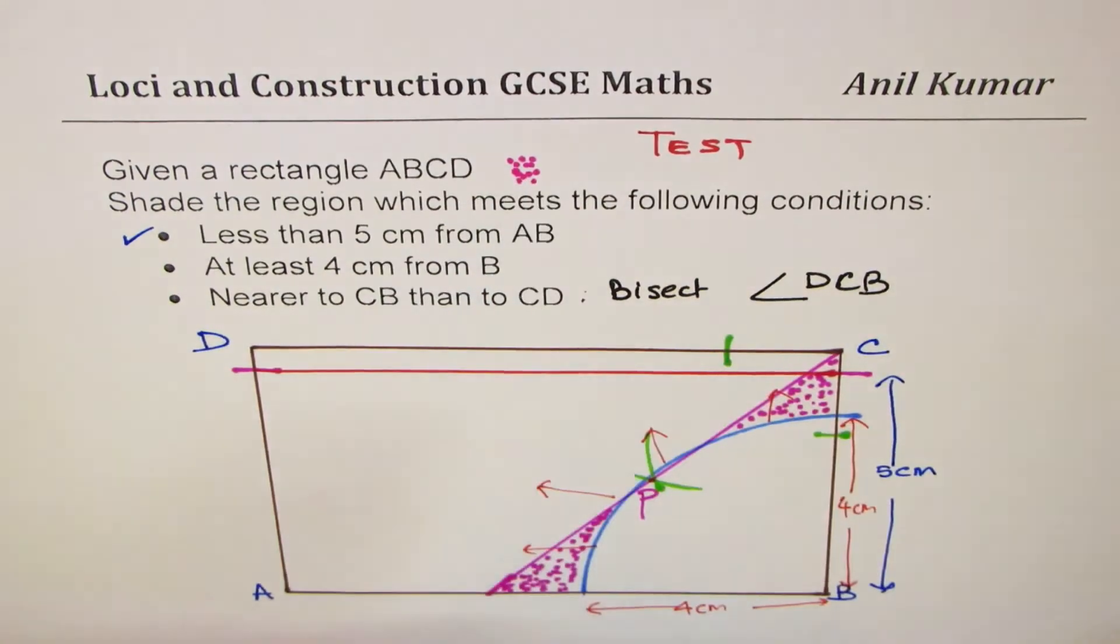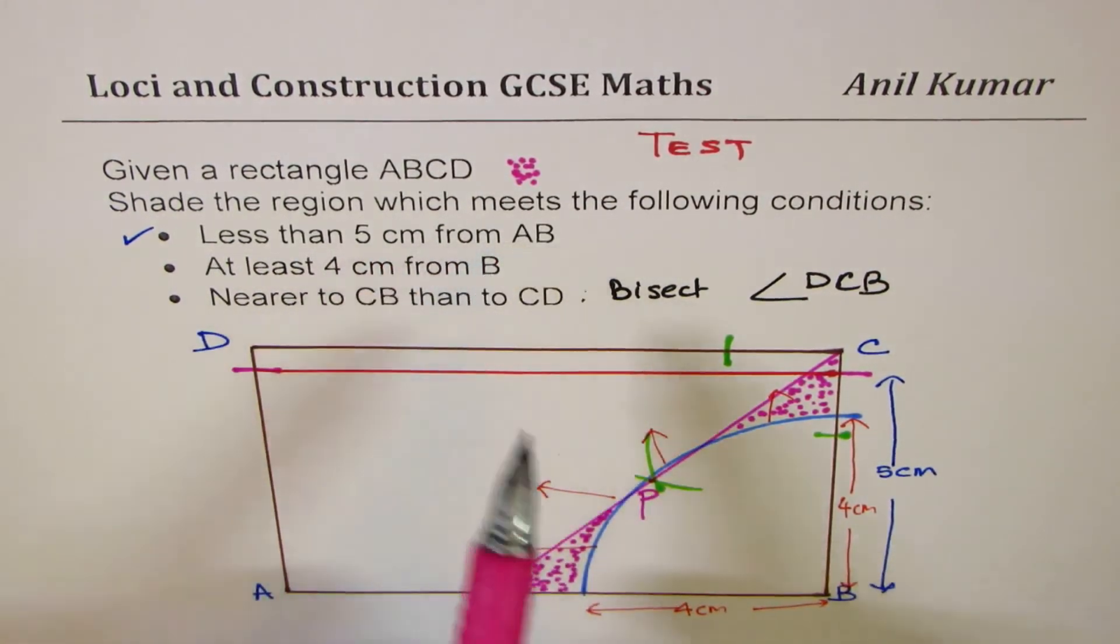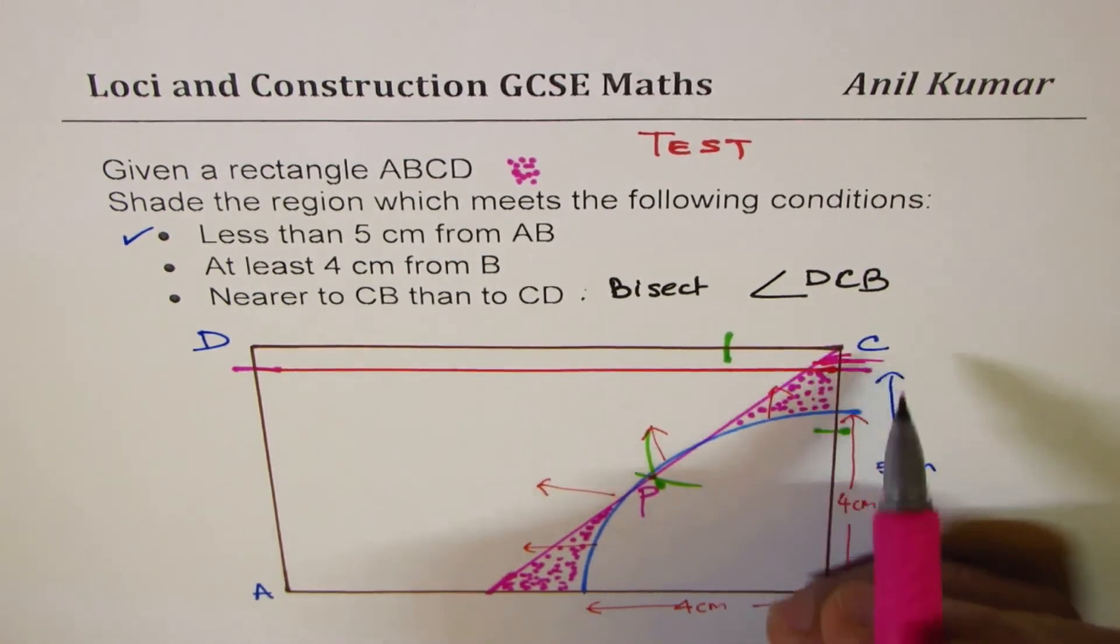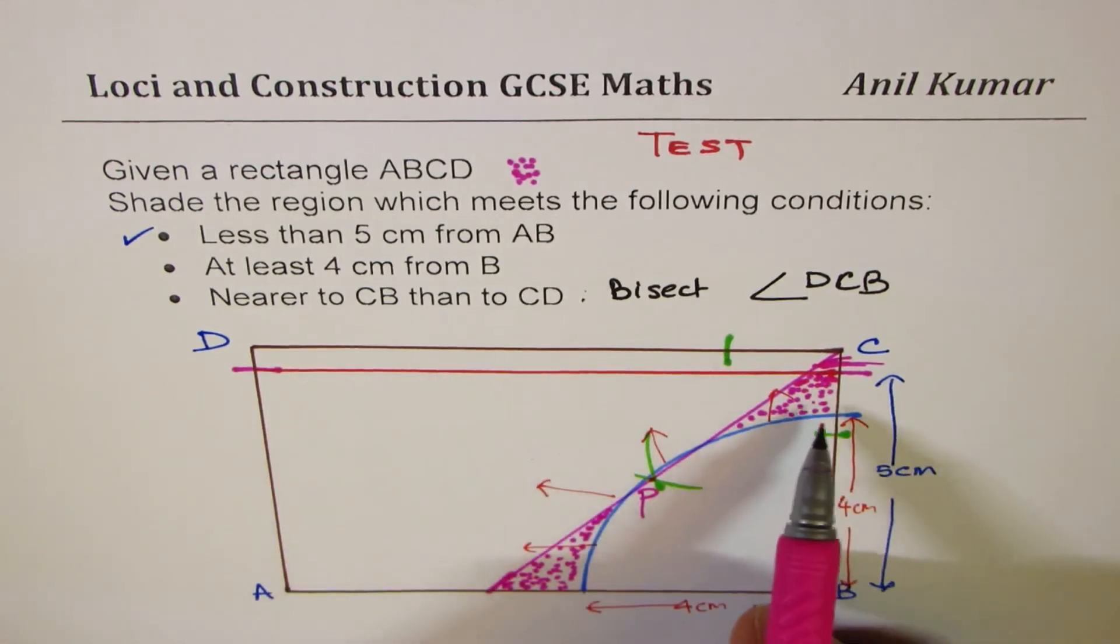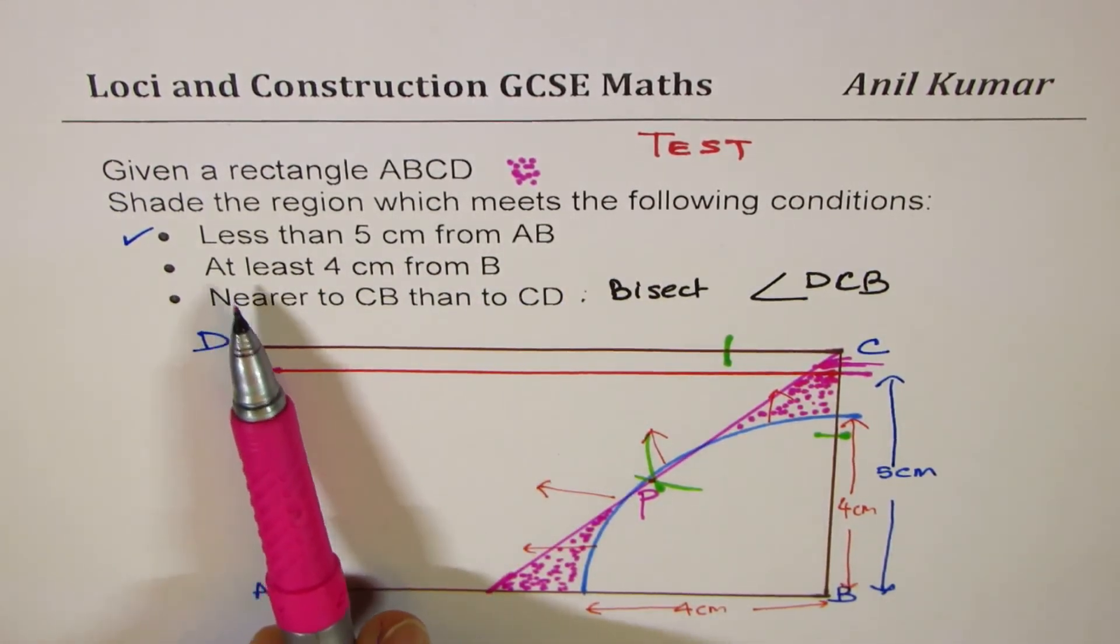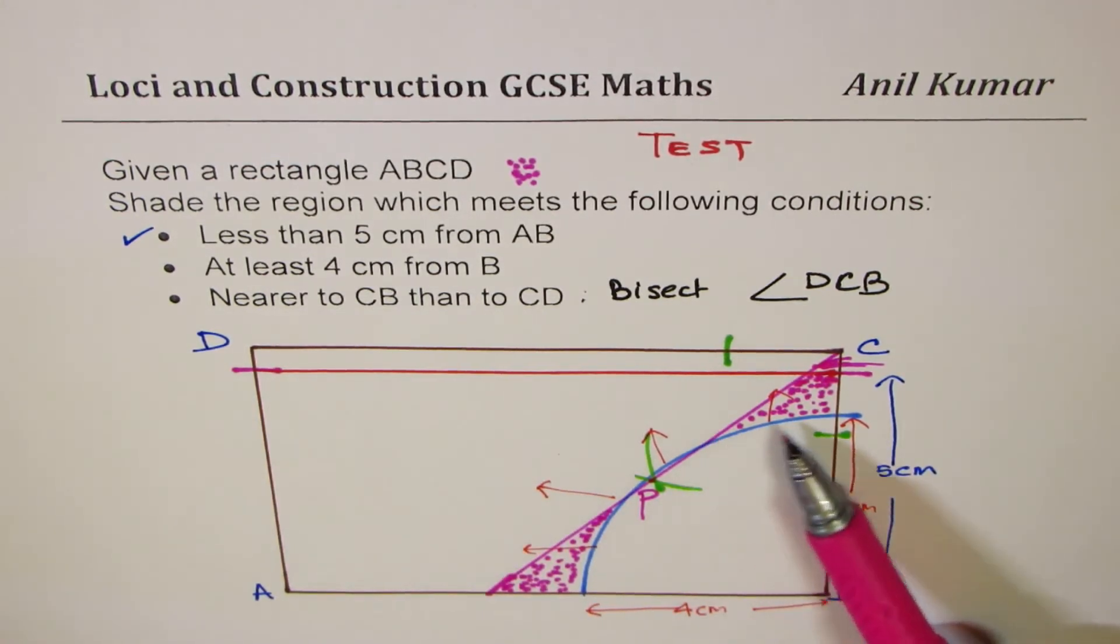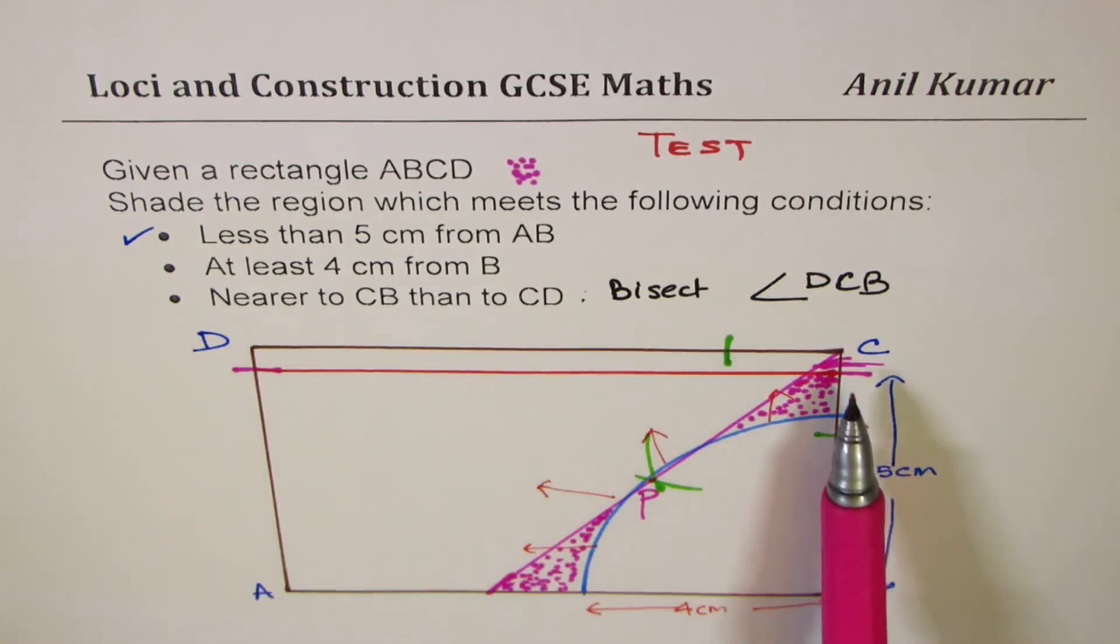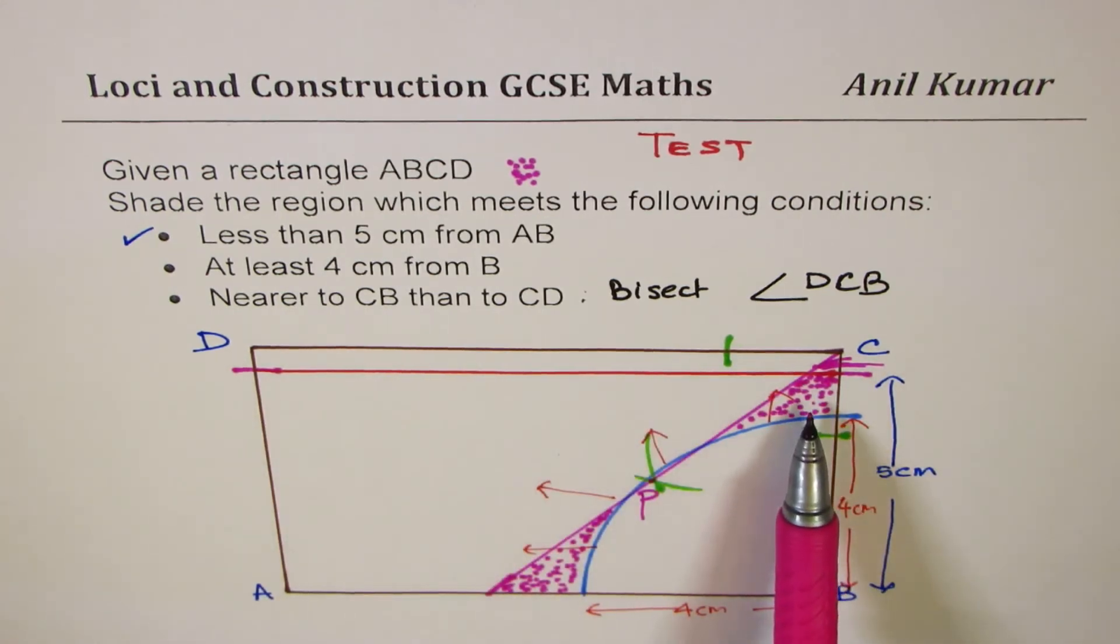So this set of points, which is our answer, this set of points, is less than 5 centimeters from AB. So less than 5 centimeters from AB, at least 4 centimeters from B, so away from this blue arc, nearer to CB than to CD. So it's closer to CB, not on the line.